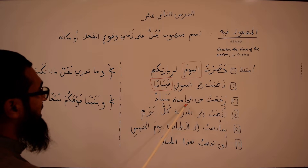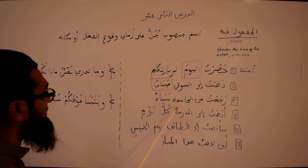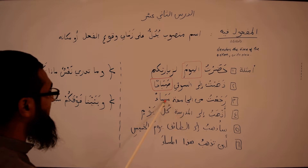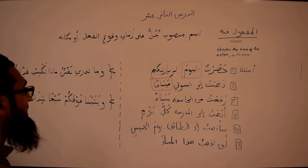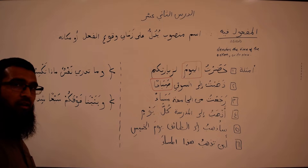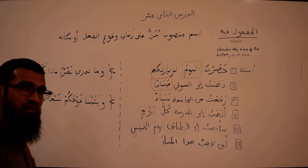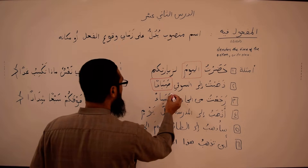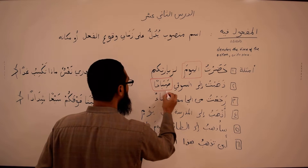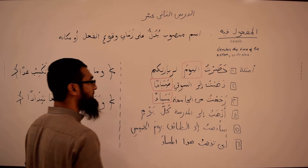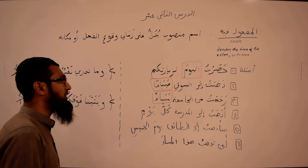Third example: رَجَعْتُ مِنَ الْجَامِعَةِ مَسَاءً — I returned from the university. متى, when? مَسَاءً — in the evening. مَسَاءً is the مفعول فيه.